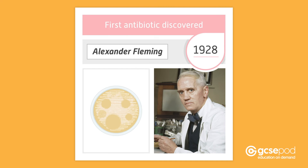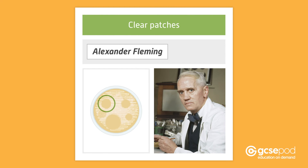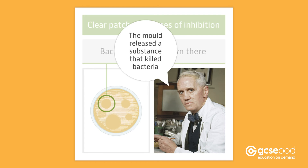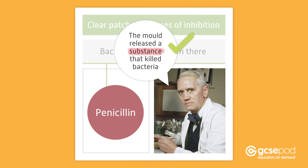He also noticed that there were clear patches, which we now call zones of inhibition, around the spots of mould. These areas were clear because the bacteria had not grown there. He concluded that the mould released a substance that killed the bacteria. Fleming was right — the substance was the antibiotic penicillin.